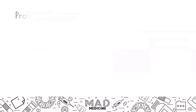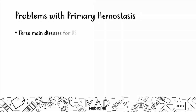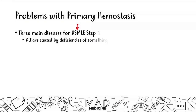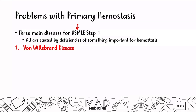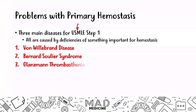When it comes to problems with primary hemostasis, there are three main diseases you need to know for USMLE Step 1. All of these are high yield. They are all caused by deficiencies in something important in the hemostasis pathway. The first disease, and the one we're discussing today, is von Willebrand disease. The second is Bernard-Soulier syndrome. The third is Glanzmann's thrombasthenia. I'll give you a mnemonic to remember all three at the end of these lectures.